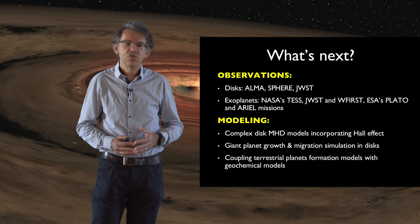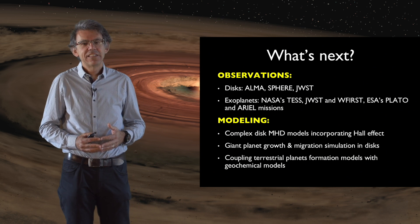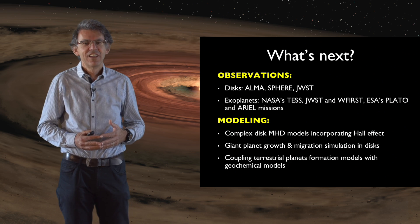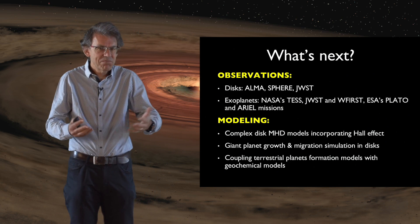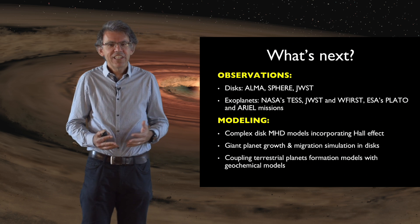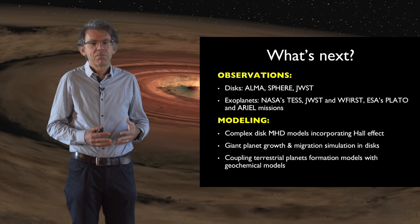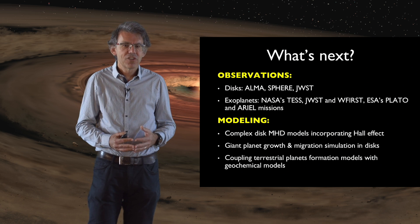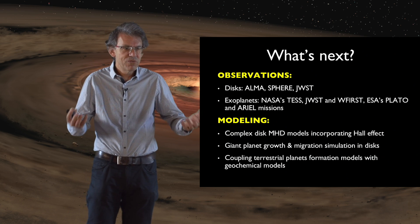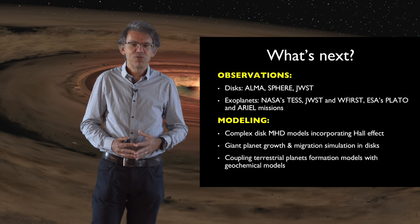On the modeling side, there are many things to do. Models of disks must be improved and made more complex and realistic, requiring magneto-hydrodynamical effects — MHD effects — in particular an effect called the Hall effect. This will make disk modeling more complex, but will probably give a more realistic description of how protoplanetary disks operate. We then need to study how giant planets grow and migrate in these more realistic disks. Finally, we need to couple terrestrial planet formation models with geochemical models that simulate how the internal composition of the Earth evolved with accretion and differentiation. There is a lot to do, and we hope to have many more Mojo projects in the future. Mojo!